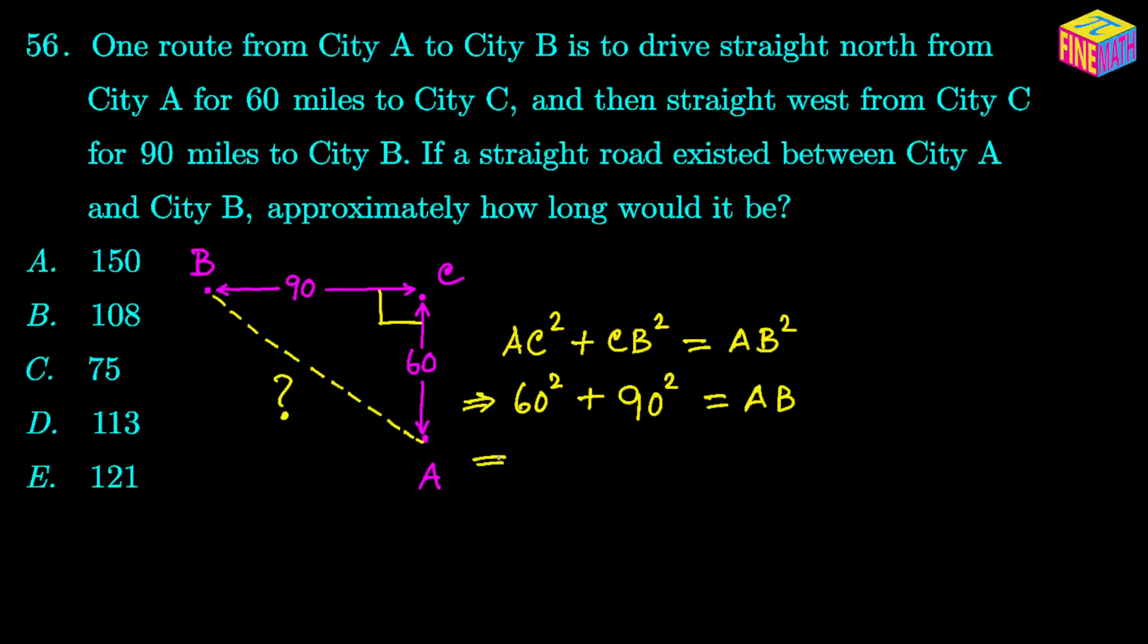From here, AB would be square root of 60 squared plus 90 squared. If you punch in the numbers in a calculator, it will come to 108.166. We have to find the approximate length, so we're going to ignore the decimal portion and get a value of 108. That is our answer.